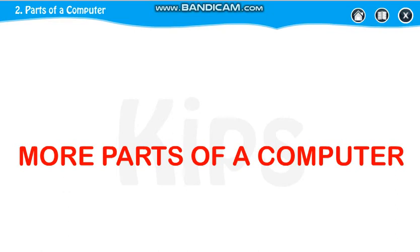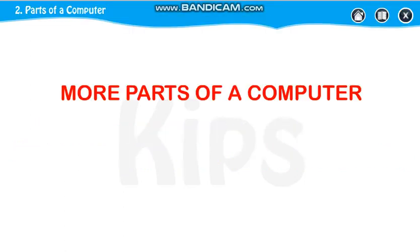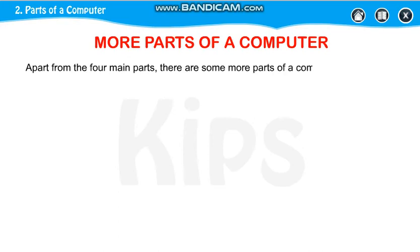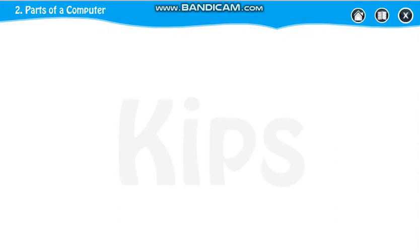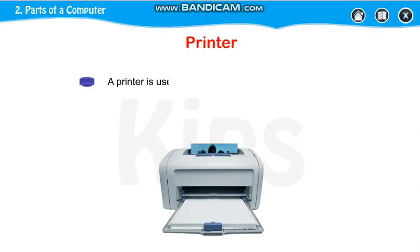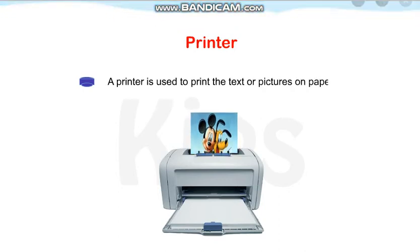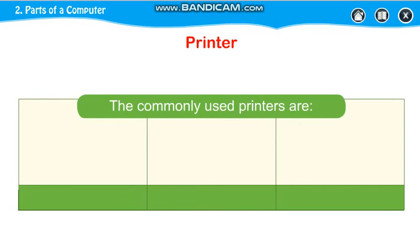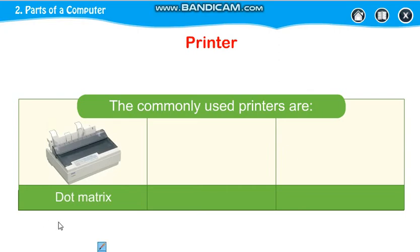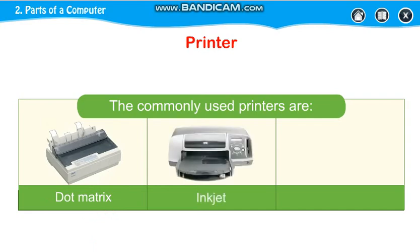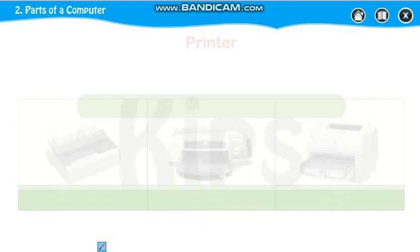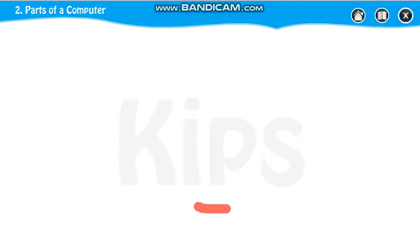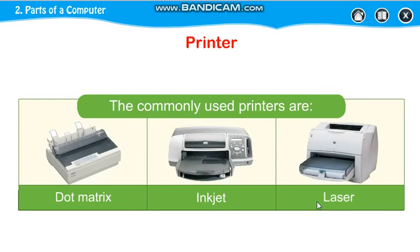There are some more parts of a computer. Let us see what these parts are. A printer is there to print pictures or text — this is your printer. When we print something on paper, it is called a hard copy. There are three types of printers: the first is the dot matrix printer, the second is the inkjet printer, and the third is the laser printer.